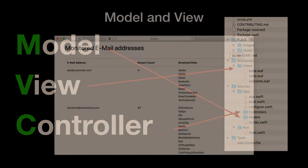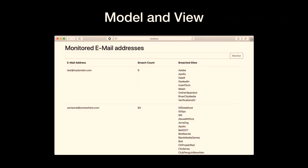From a web page standpoint, the model is the data. Things like email addresses and breach sites — that's our model, our data. How it's all organized on the page is our view. And the controller is the code that links those together — it takes the request, figures out what it means, goes and gets data out of the model, pipes it into the view, and sends it back out.